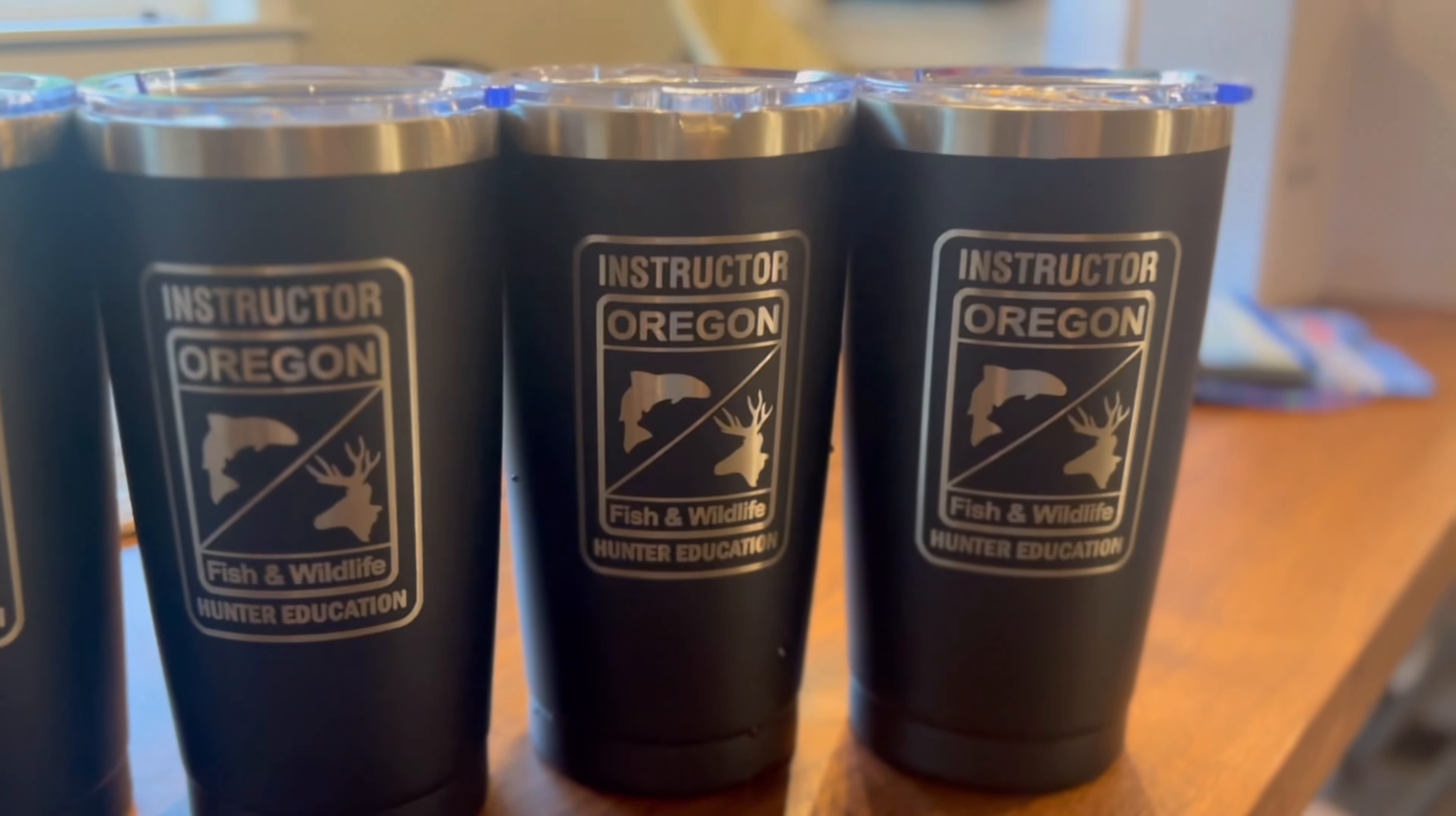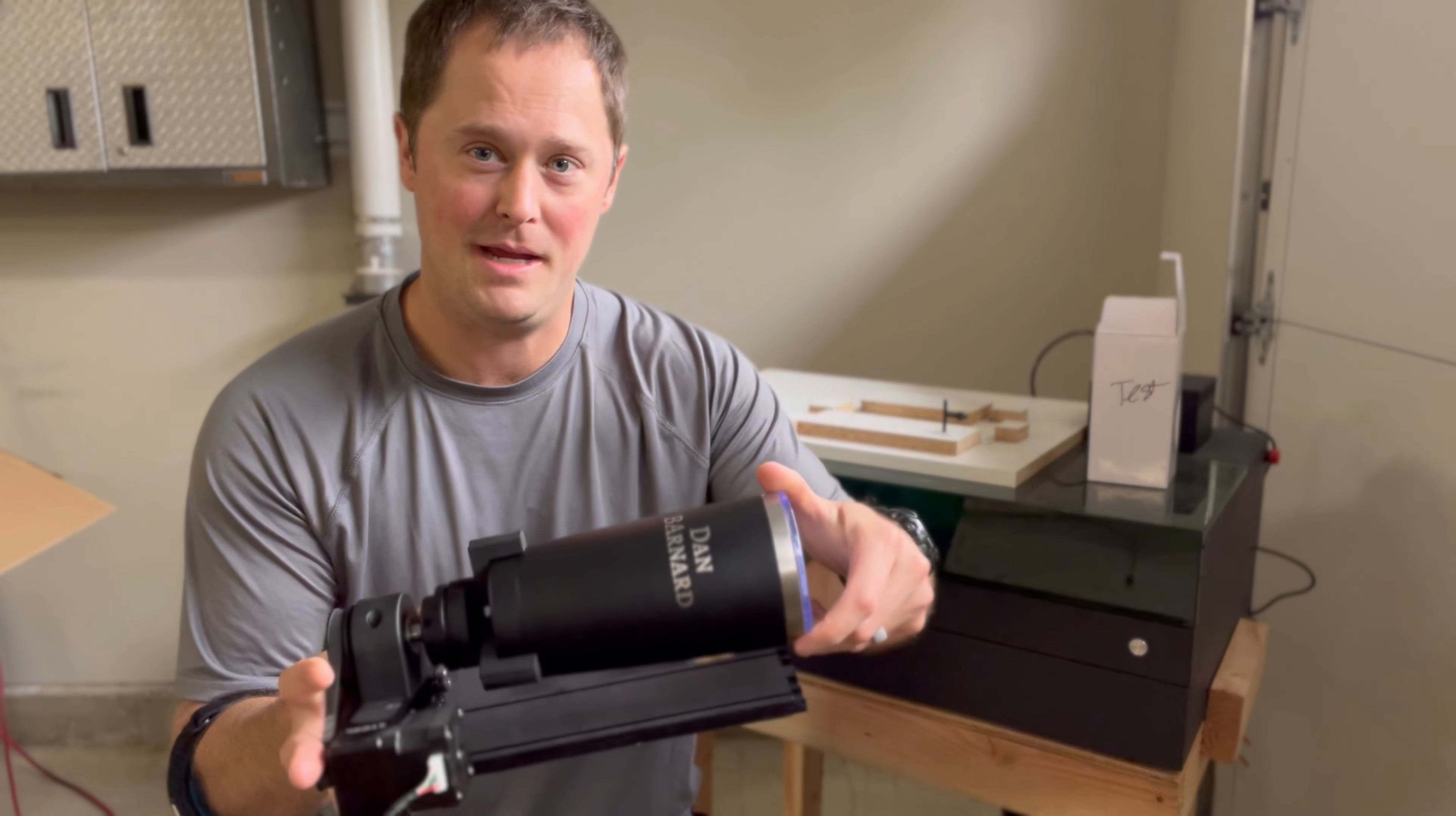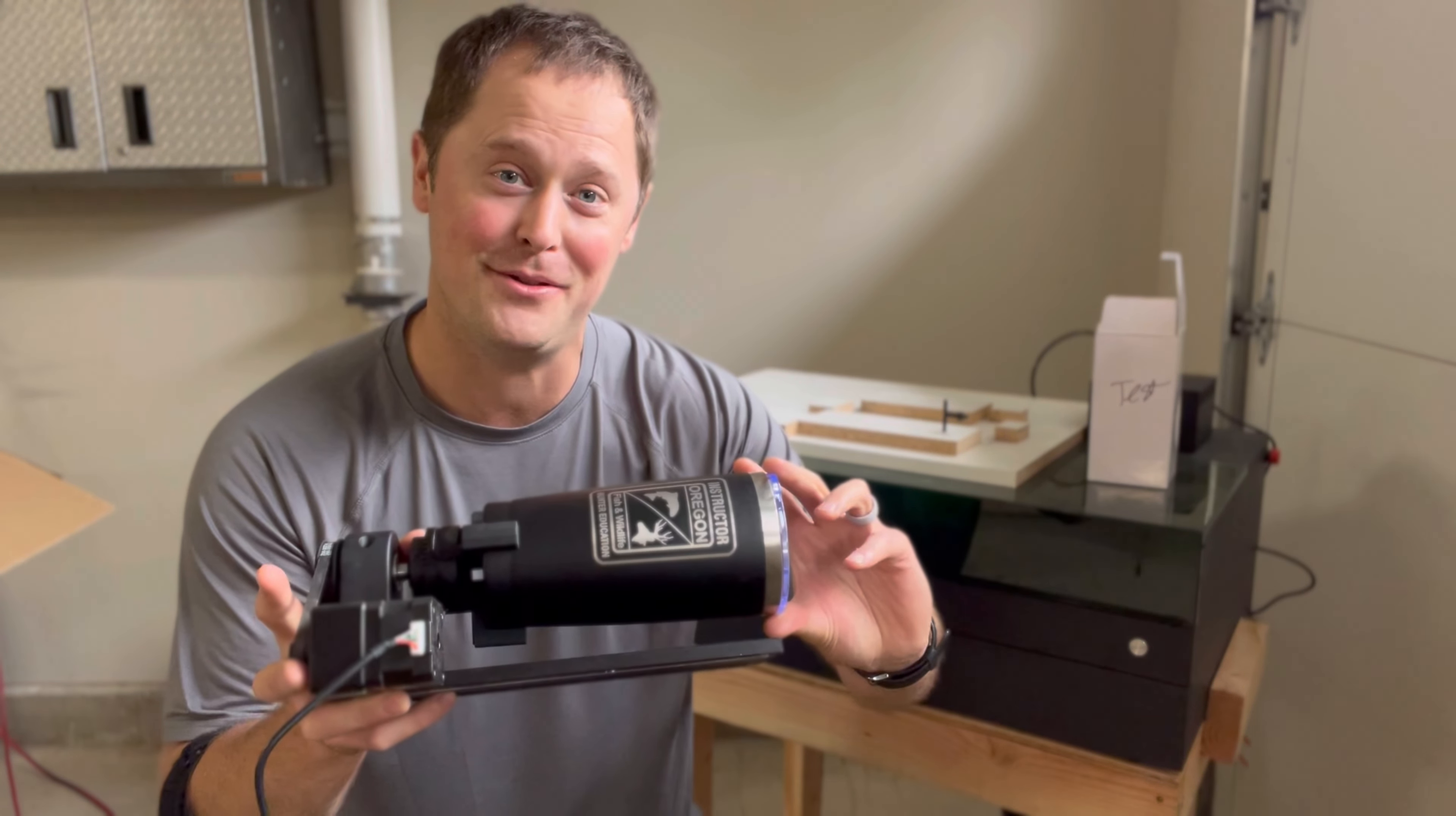I already have the X-Tool S1 laser along with this rotary attachment that attaches to tumblers. I'm able to get a personalized name and logo exactly 180 degrees today from each other. I'm going to show you how I do that.